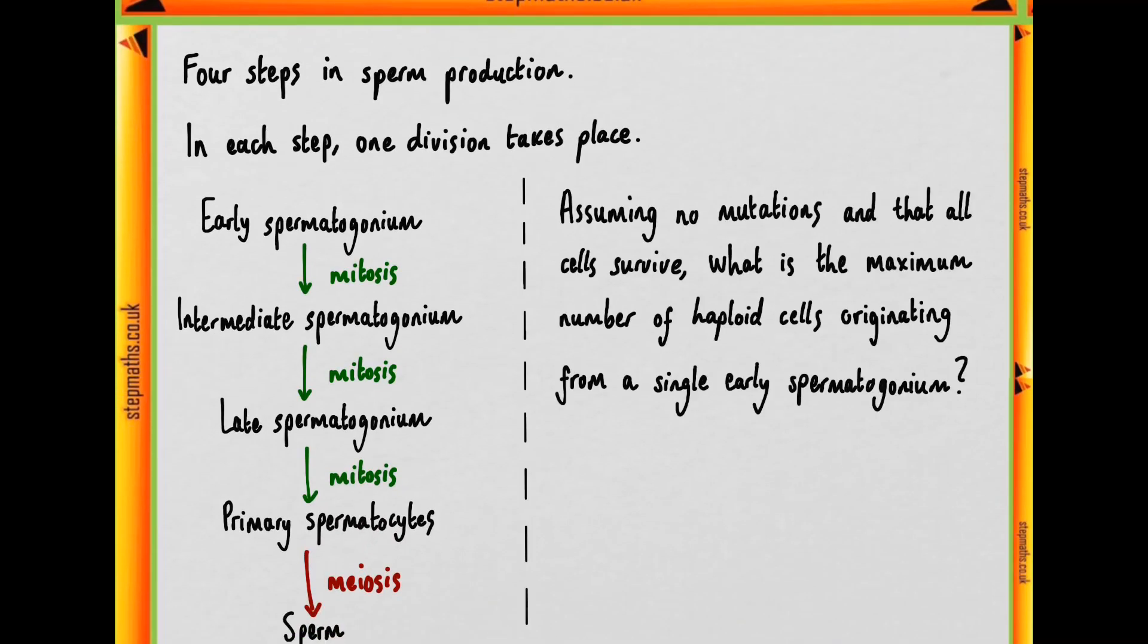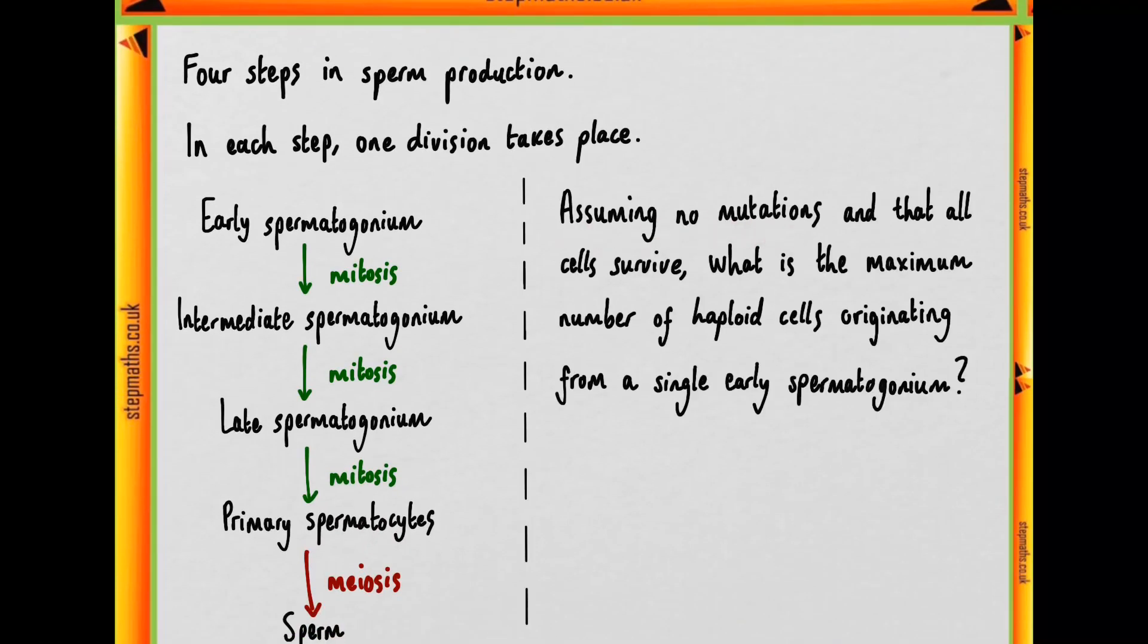Then we're asked, assuming that there are no mutations taking place and that all of the cells survive, what is the maximum number of haploid cells originating from a single early spermatogonium, i.e. this cell here?